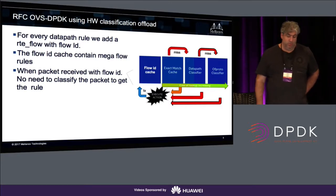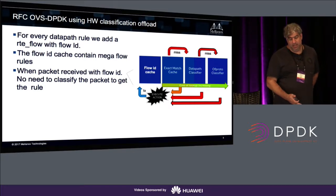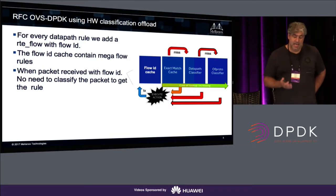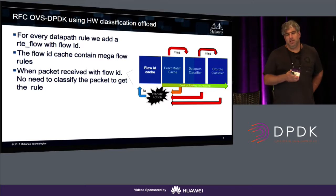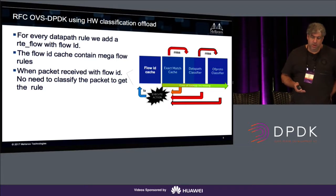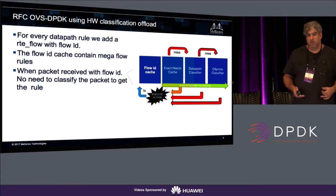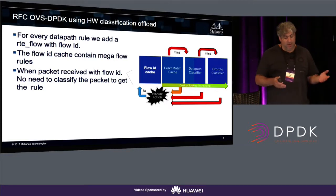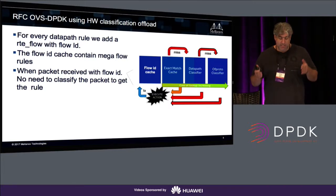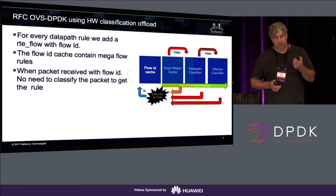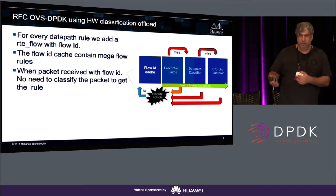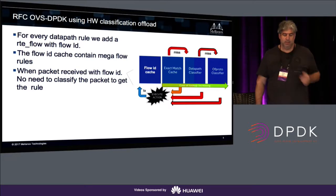In the RFC, OVS DPDK has an exact match cache. Before going to the exact match cache, the first thing we do is check if there is a flow ID for this packet. For every data path rule — every mega flow — we create an RTE flow into the hardware to classify the packet. When the packet arrives and it has a flow ID, we skip the exact match cache entirely. We take the flow tag directly, identify which flow it belongs to, and execute the actions for that rule.